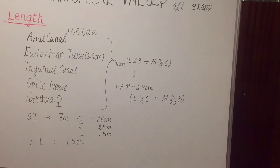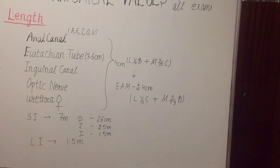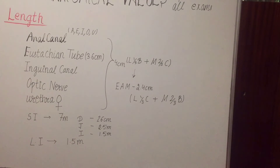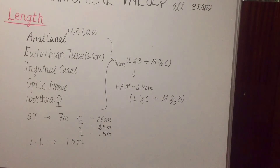Remember: in the Eustachian tube, lateral one third is bony and medial two thirds is cartilaginous, while in the external auditory meatus it is the opposite. Small intestine length is 7 meter; jejunum is 26 centimeter, proximal jejunum is 2.5 meter, ileum is 1.5 meter. Large intestine length is 1.5 meter.